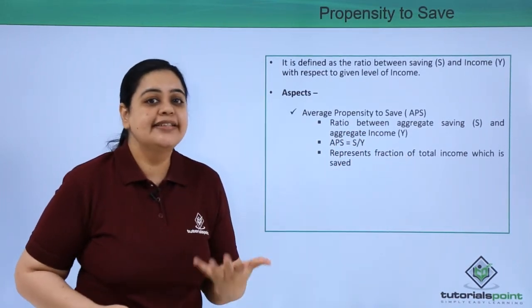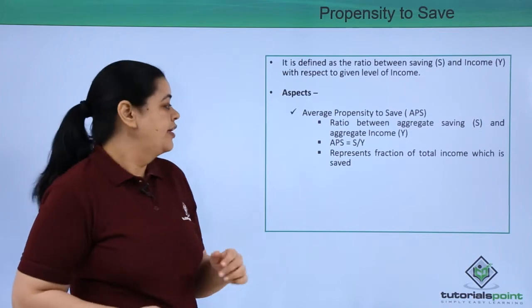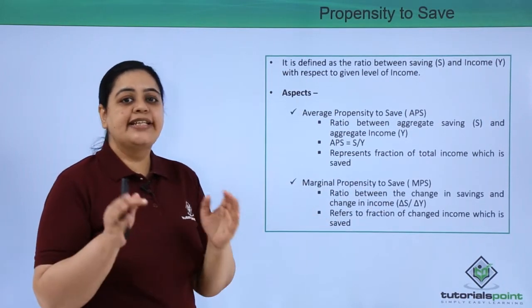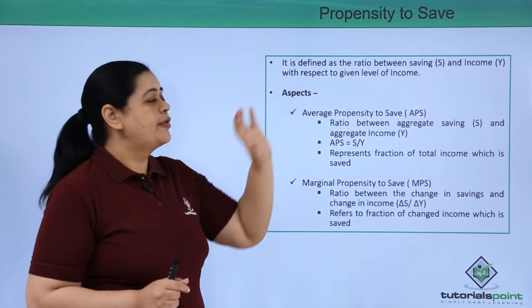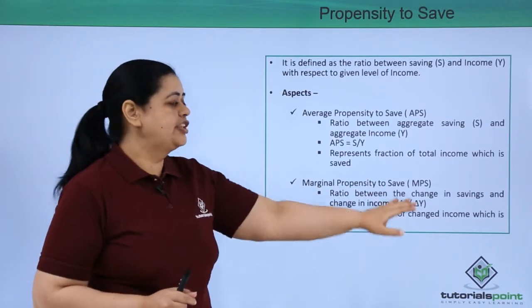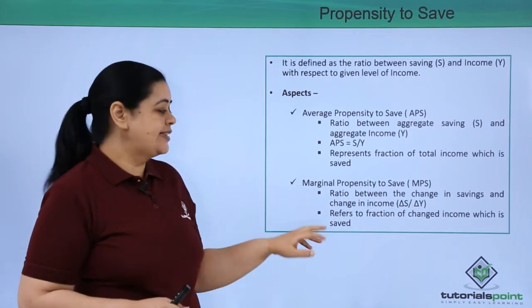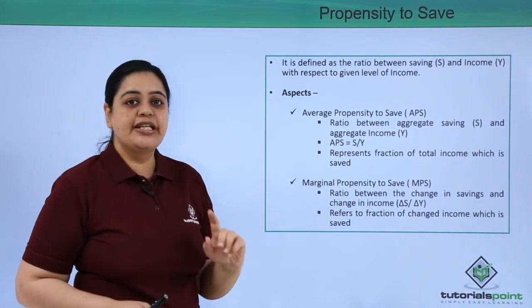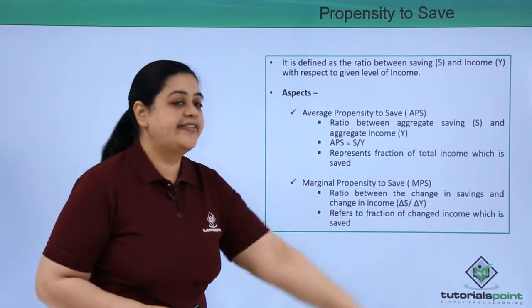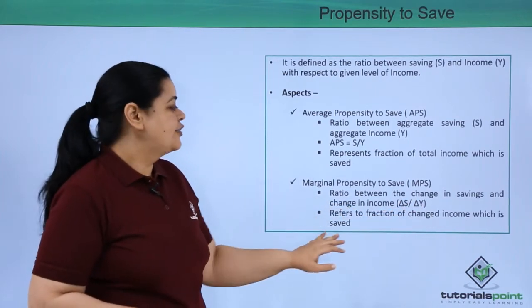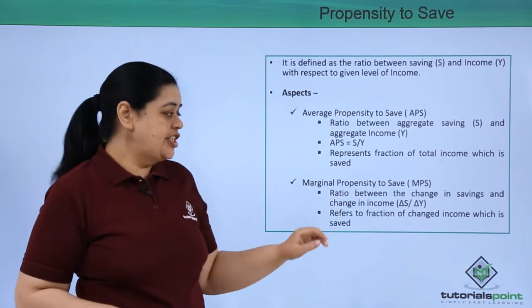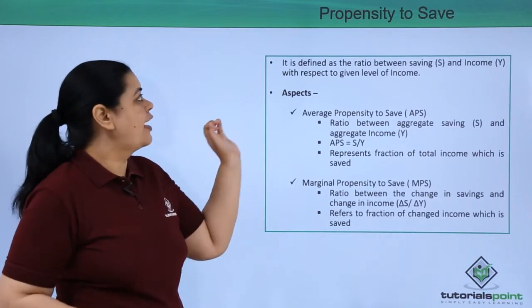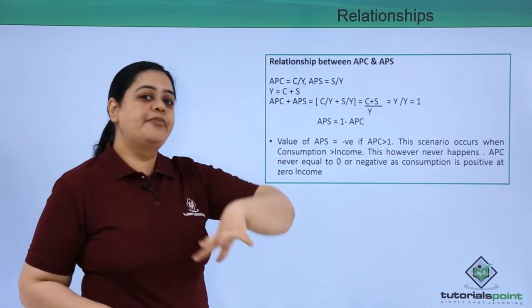The second aspect of propensity to save is marginal propensity to save (MPS), which is the ratio of change in savings to change in income — ΔS / ΔY. This refers to the fraction of changed income which is saved.